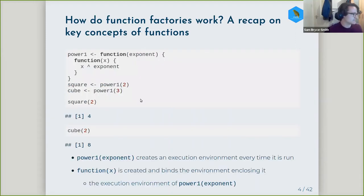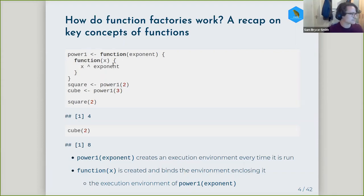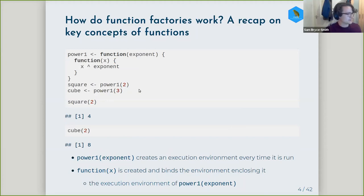In this example with power_one: when you call power_one and give the value for exponent, it creates an execution environment every time it is run. When the function is created, it binds the enclosing environment. For the manufactured function x, this is the execution environment of power_one. This is how square and cube are able to track the value of exponent, and how this value is able to be different for square and cube each time you call power_one.